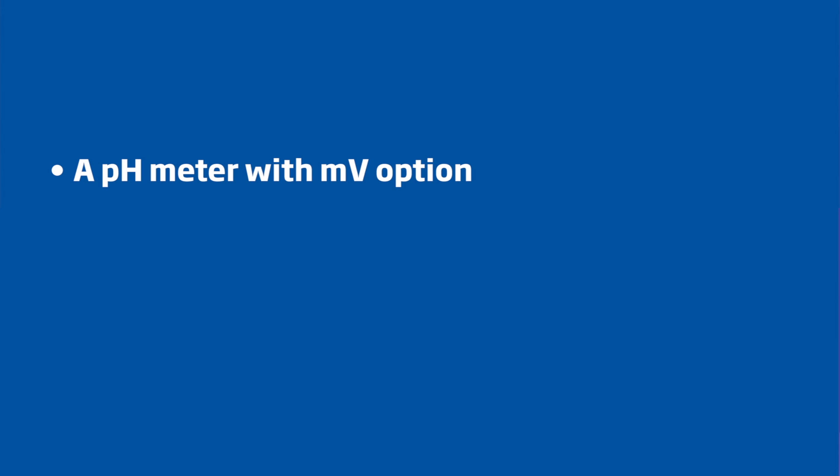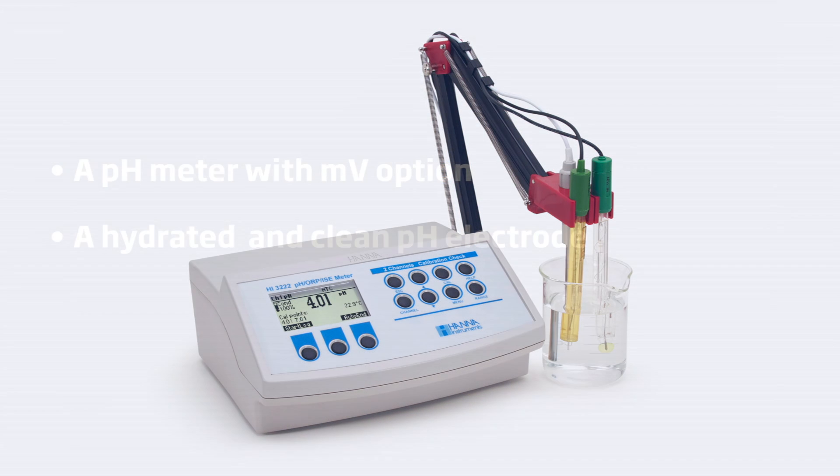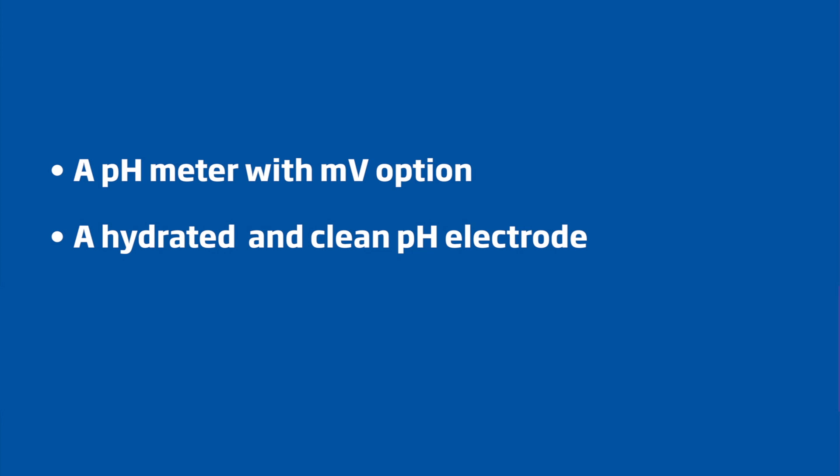Before proceeding with checking the pH electrode condition, the user will need a pH meter with a millivolt option, such as the HI3222, to ensure that the pH electrode glass is hydrated and clean, and fresh buffer solutions.